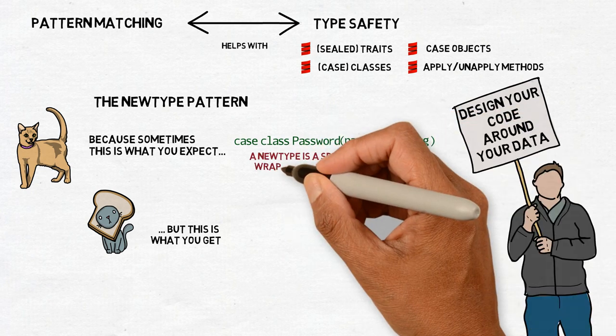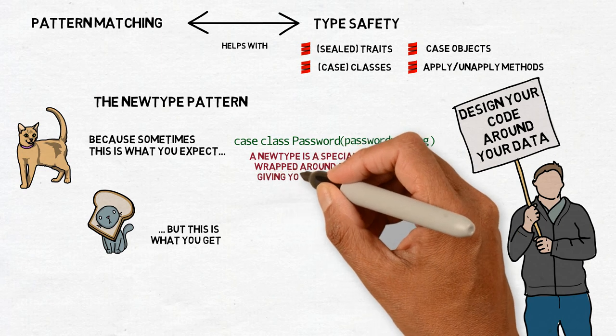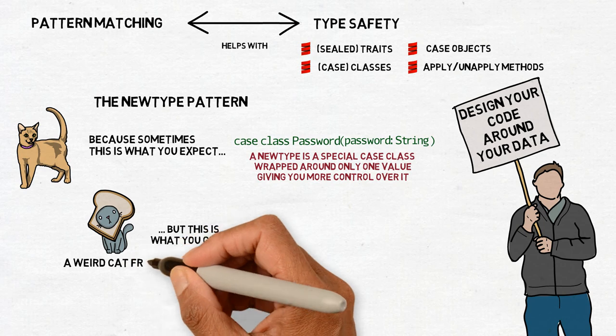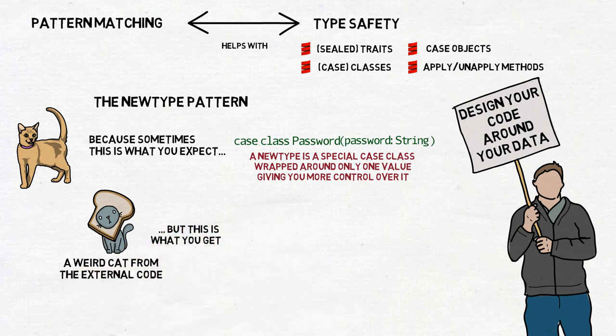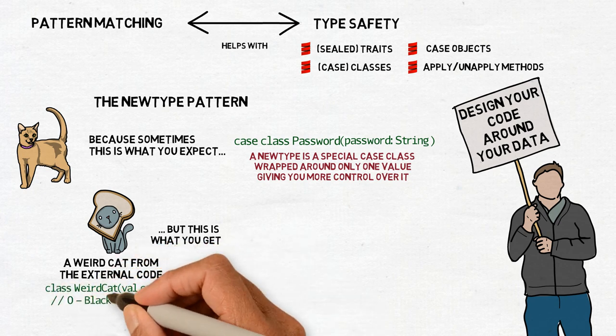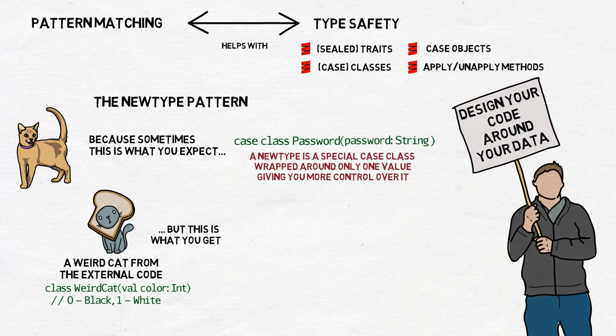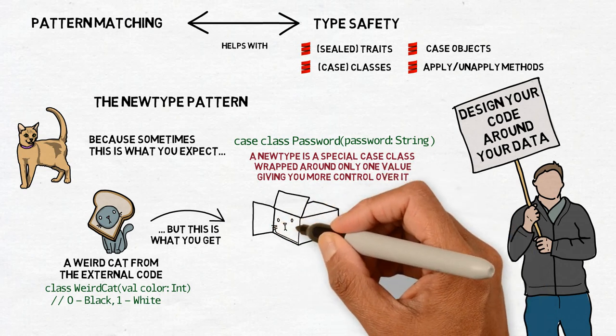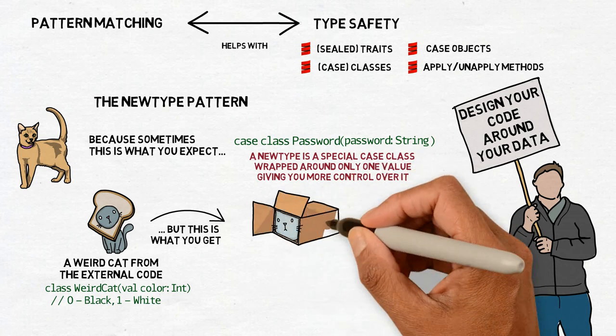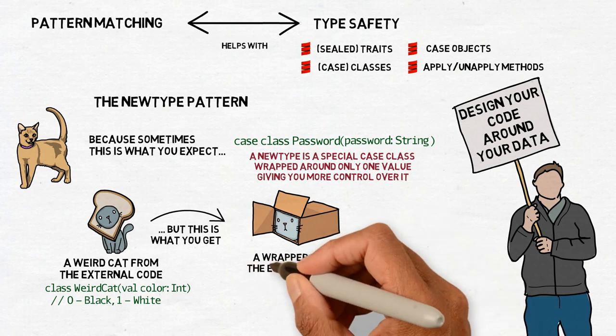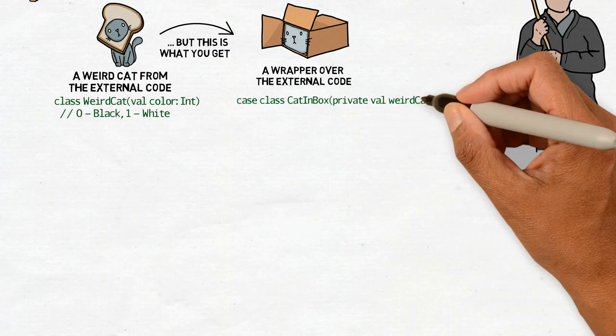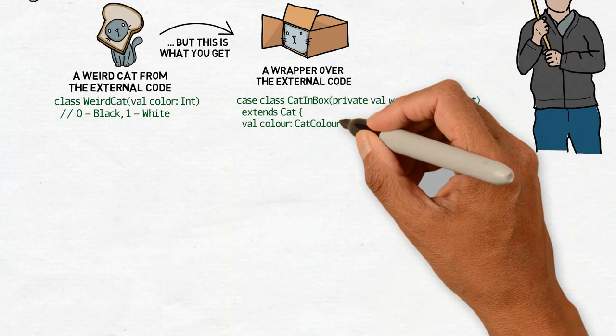There's one simple trick to fix this. Wrap those ugly instances into pretty classes of your own. Say you receive the class WeirdCat from somewhere. WeirdCat does not extend your sealed trait Cat. And instead of the CatColor's field Color, it used the Americanized version of the word Color. Yet, apart from those details, it almost fits. You would like to use those weird cats, and it would be great if you didn't have to duplicate your code because of those small differences.